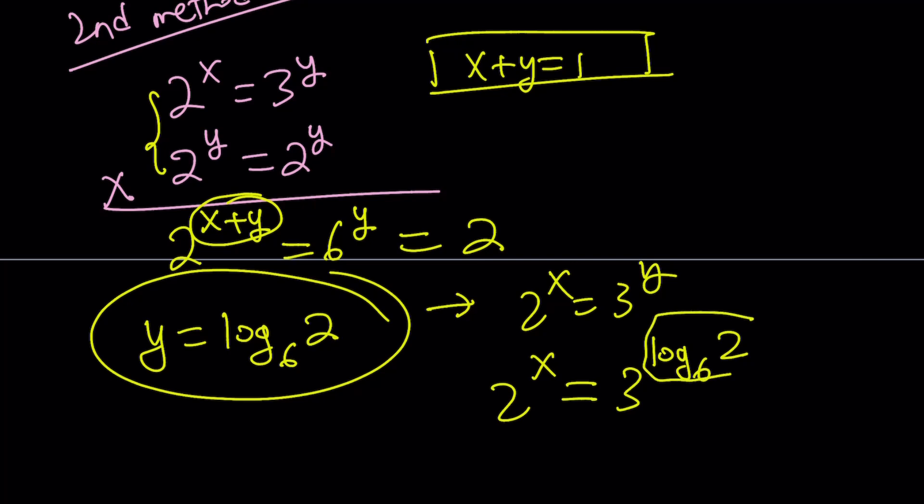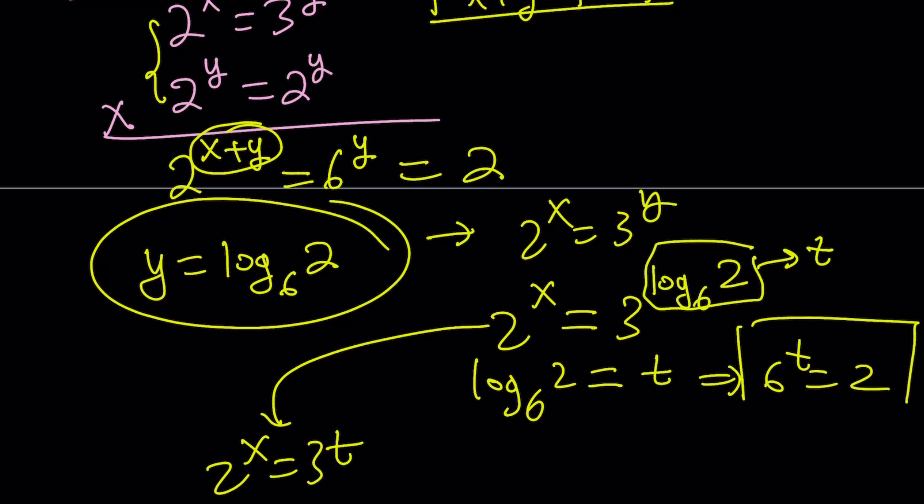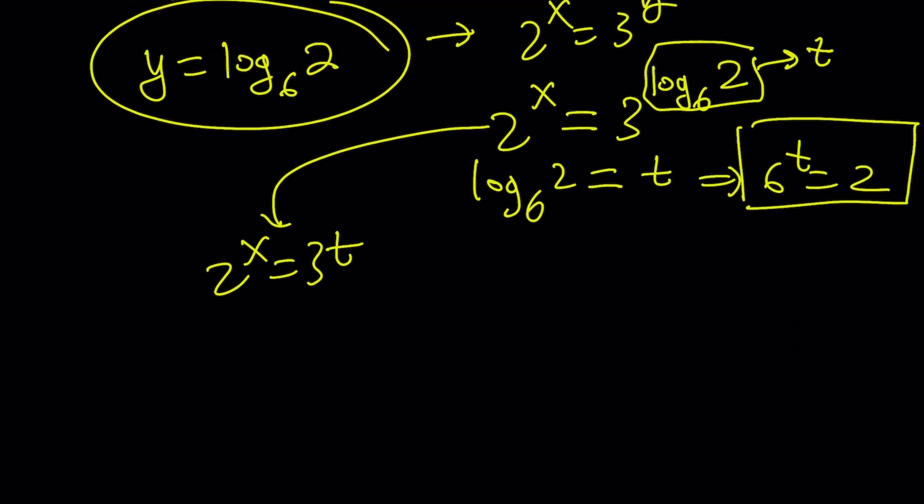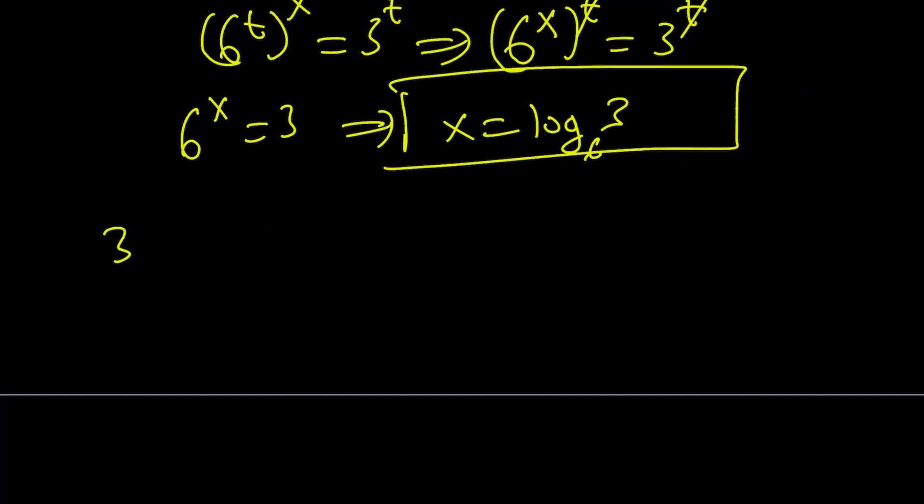Or you can do the following. Let's do a fancy substitution here. Call this t. You get log 2 with base 6 equals t, which means 6 to the power t equals 2. And then we also have 2 to the x equals 3 to the power t. I kind of turned it into a system. We have 2 to the x equals 3 to the t, but you can replace 2 with this. That gives you 6 to the t to the x equals 3 to the t. From here, you can switch the x and t around, and then raise both sides to the power 1 over t to cancel out the t. And you get 6 to the x equals 3. Obviously, that's such a long way to do it, but x becomes log 3 with base 6 as before. Now let's take a look at the third method.